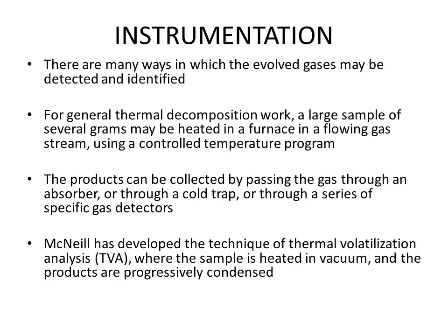There are many ways in which the evolved gases may be detected and identified. For general thermal decomposition work, a large sample of several grams may be heated in a furnace in a flowing gas stream using a controlled temperature program. The products can be collected by passing the gas through an absorber, through a cold trap, or through a series of specific gas detectors. These are the methods of collection of products in the form of gas.